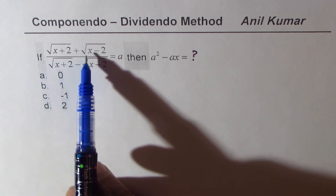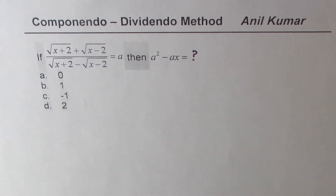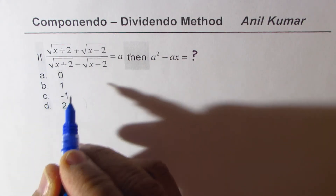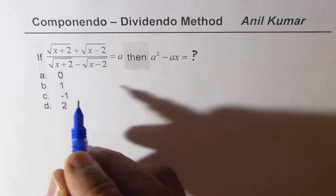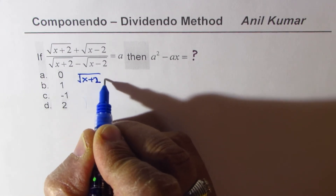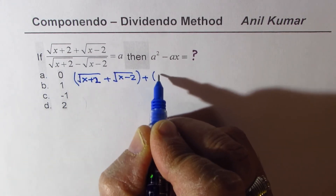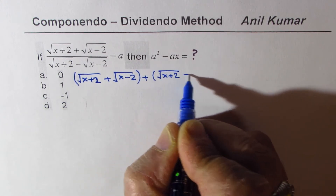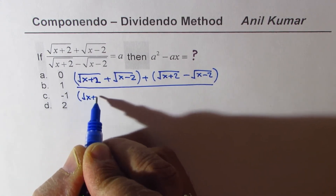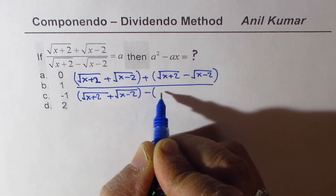We are given: if square root of (x plus 2) plus square root of (x minus 2), divided by their difference, equals a, then a squared minus ax equals what? Applying the property of componendo and dividendo to the given expression, the numerator becomes square root of (x plus 2) plus square root of (x minus 2), and the denominator is square root of (x plus 2) minus square root of (x minus 2).